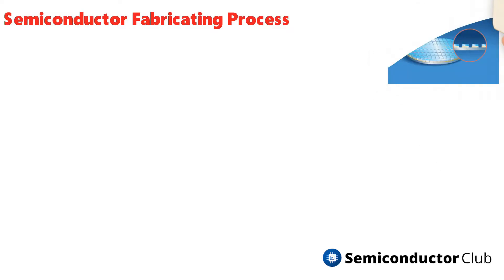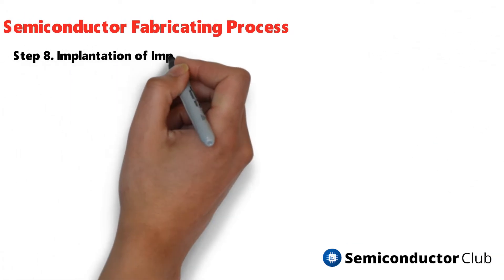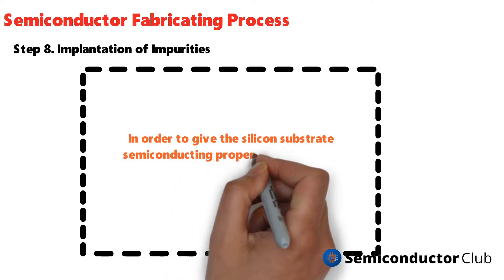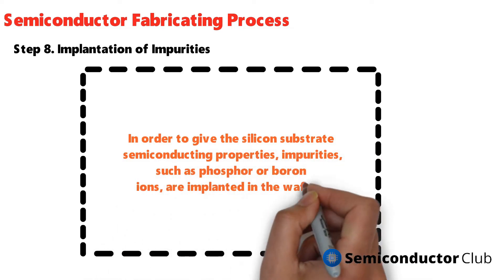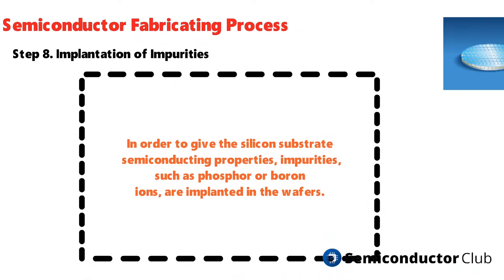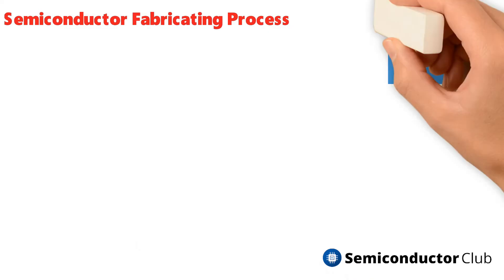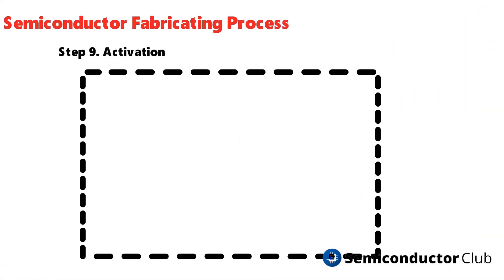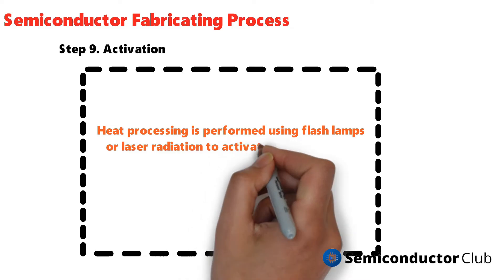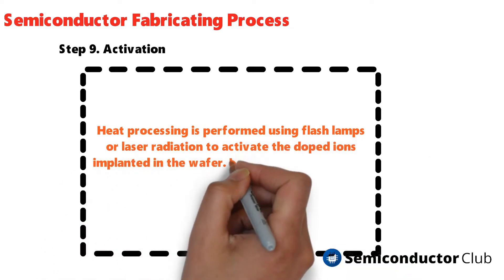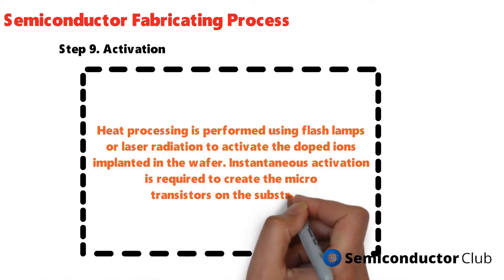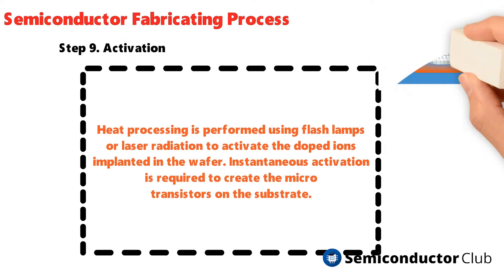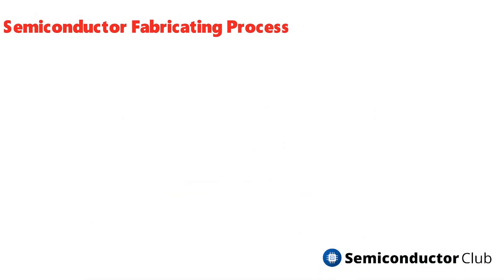Implantation of impurities: in order to give the silicon substrate semiconducting properties, impurities such as phosphorus or boron ions are implanted in the wafers. Activation processing is then performed using flash lamps or laser radiation to activate the doped ions — instantaneous activation is required to create the micro-transistors on the substrate.